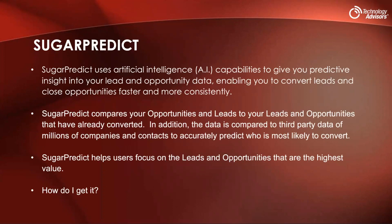First up, we'll be talking about Sugar Predict — their AI tool that analyzes leads and opportunities. This came about in 2020 when Sugar acquired a customer intelligence startup called Node. While evaluating Node, Sugar provided them an older backup of their instance and asked them to predict what happened over the next few months. The results were very accurate, so they purchased it. It compares your opportunity and lead data to records that have already converted or closed, so its predictions get better over time. It also uses some third-party data to help its predictions.